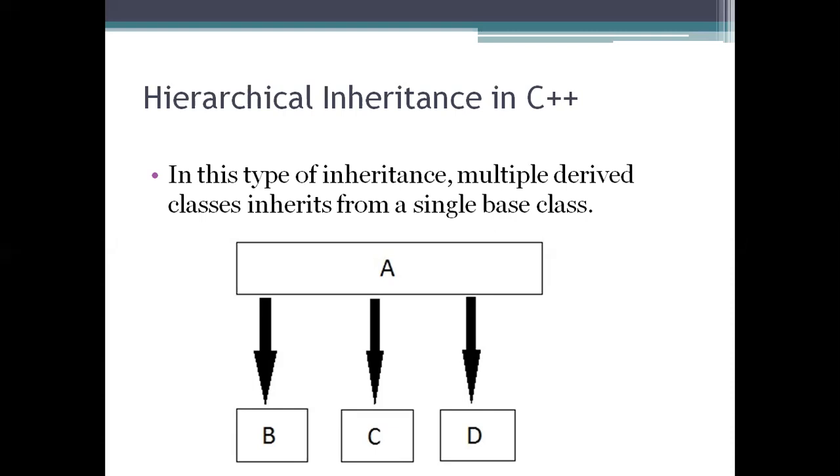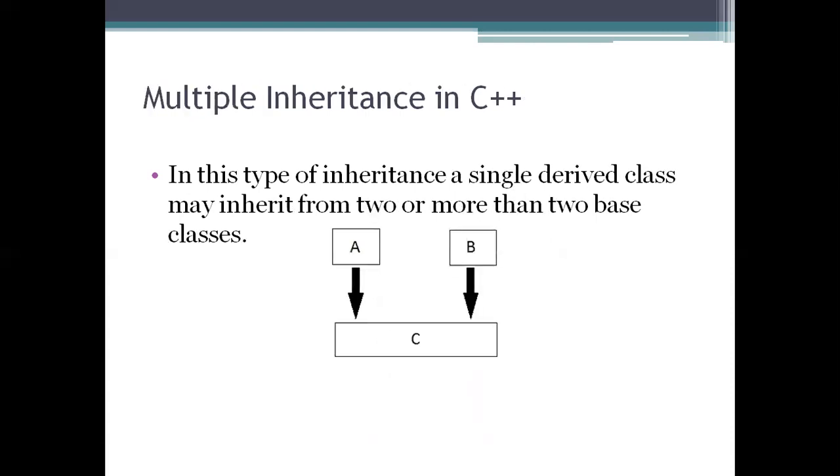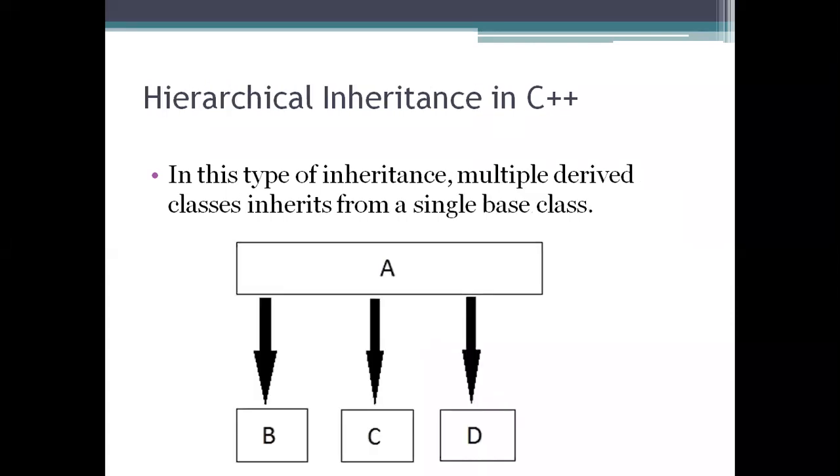This class diagram shows the structure. For single inheritance, you have a super class or base class with an arrow pointing to the child class. You can use the terms super class, base class, parent class, or child class interchangeably, but try to be consistent.